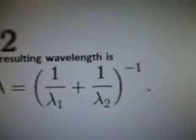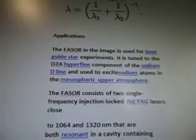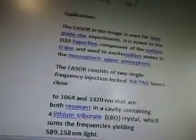If the source wavelengths are X — or whatever that symbol is — the resulting wavelength is going to be this. Applications: the phasor in the image is used for laser guide star experiments. It is tuned to the D2A hyperfine component of the sodium D2 line and used to excite sodium atoms in the mesospheric upper atmosphere. The phasor consists of two single-frequency injection-locked Nd:YAG lasers close to 1064 and 1320 nm, both resonant in a cavity containing a lithium triborate (LBO) crystal which sums the frequencies, yielding 589.158 nm light.